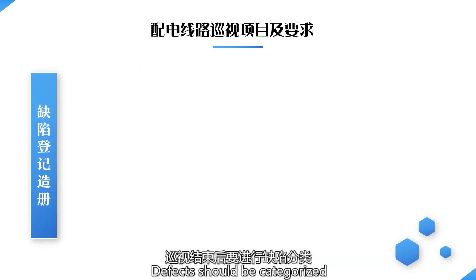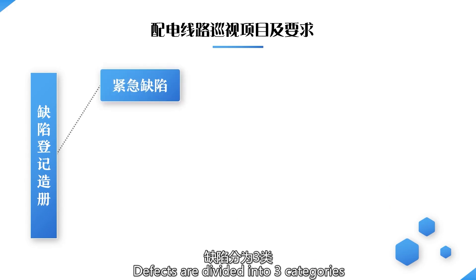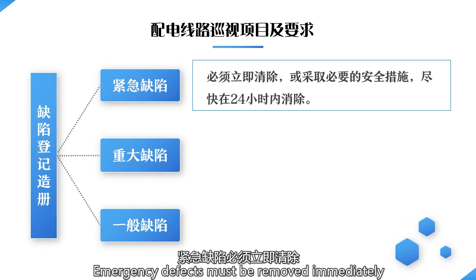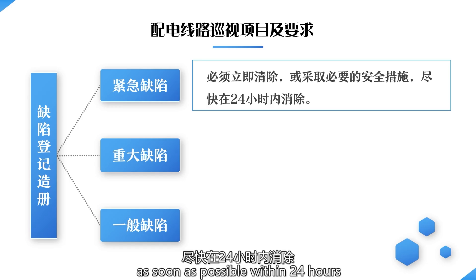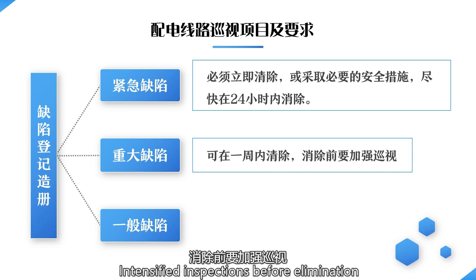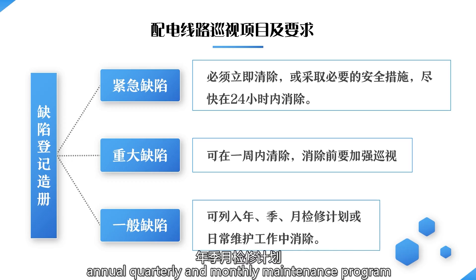At the end of the inspection, defects should be categorized and registered. Defects are divided into three categories: emergency defects, major defects, and general defects. Emergency defects must be removed immediately or have necessary safety measures taken within 24 hours. Major defects can be removed within a week, with intensified inspection before elimination. General defects can be included in annual, quarterly, and monthly maintenance programs or eliminated during routine maintenance.